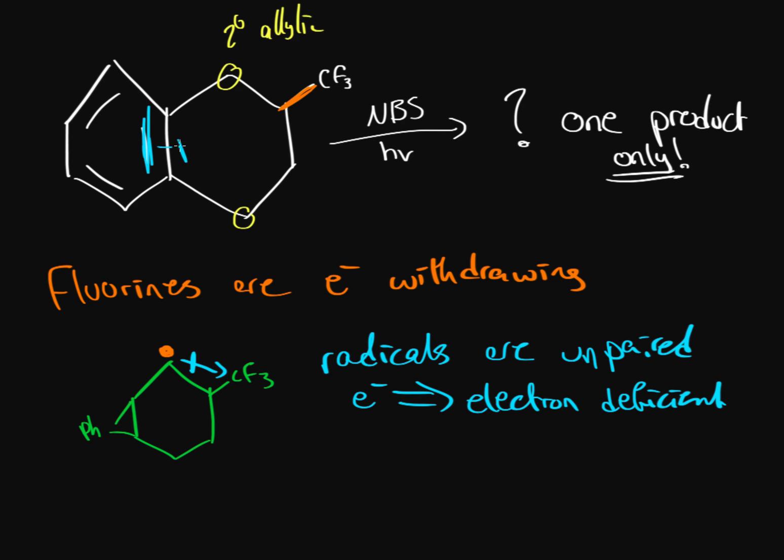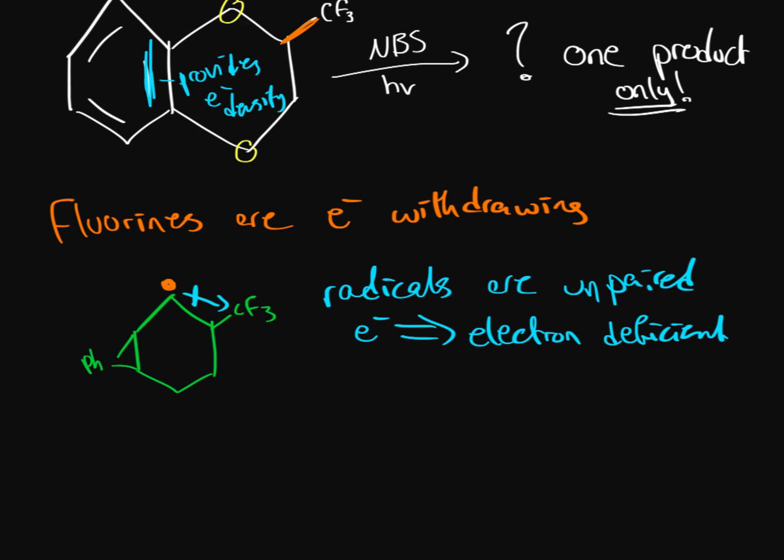In fact, the reason we picked secondary allylic over here is because a double bond provides density, so provides electron density. So when you have an inductive effect next to a radical mechanism, that's actually going to make it less reactive because it's less stable. So our actual most stable carbon over here is this one.